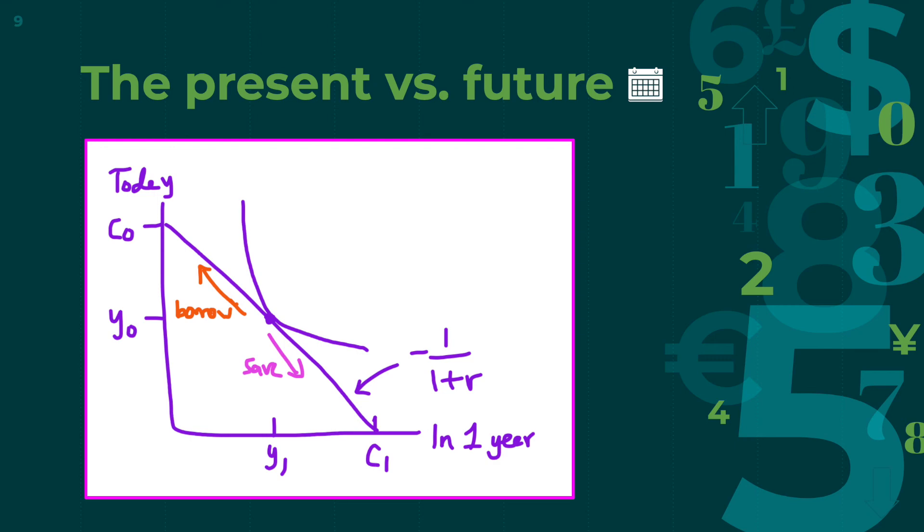In the case of borrowing, we have to pay back the amount we borrowed times 1 plus R, and when we save, the bank pays us back what we saved times 1 plus R. Our consumption today can be represented by our current income plus the amount we can borrow, whereas our consumption a year from now can be represented by next year's income plus the amount we save.